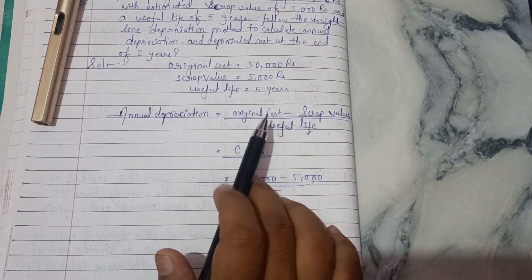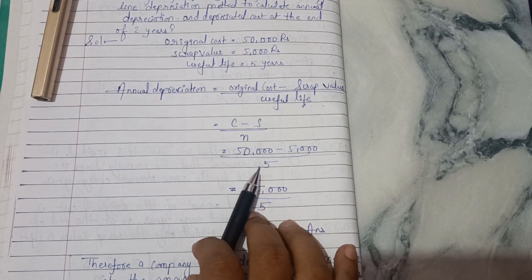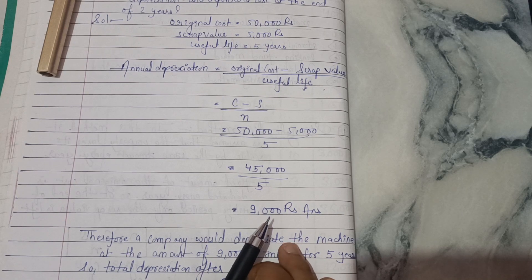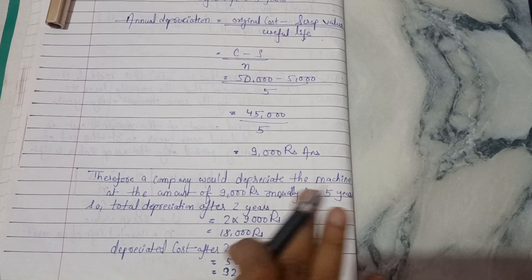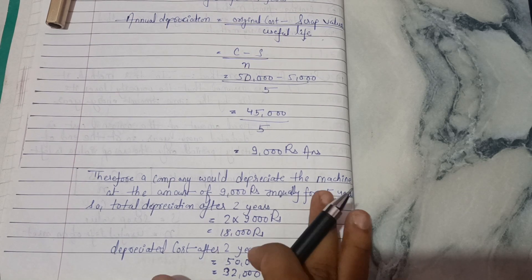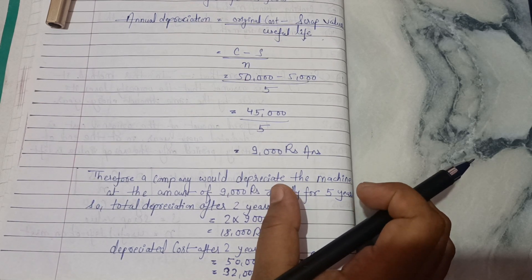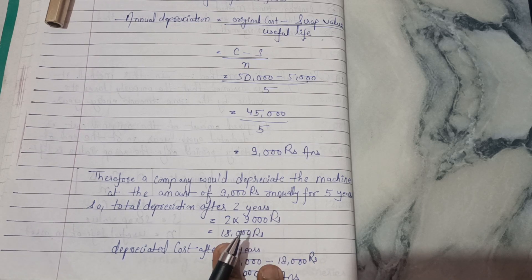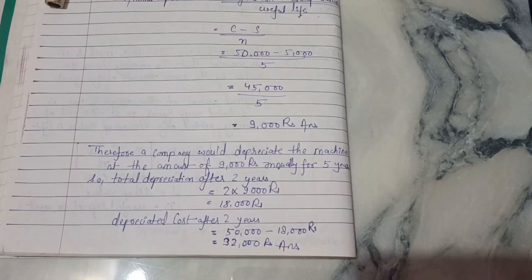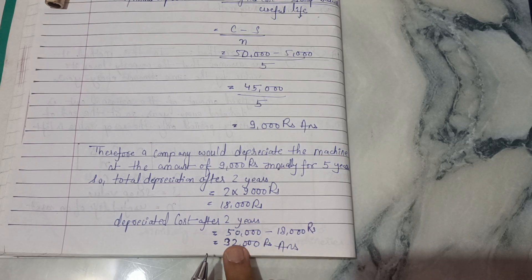Applying the formula, annual depreciation = (50,000 − 5,000) / 5 = 9,000 rupees. Therefore, the company would depreciate the machine at 9,000 rupees annually for 5 years, since in the straight line method the same amount of depreciation occurs every year. Total depreciation after two years = 2 × 9,000 = 18,000 rupees. So the depreciated cost after two years = original cost − total depreciation = 50,000 − 18,000 = 32,000 rupees.